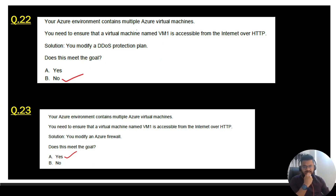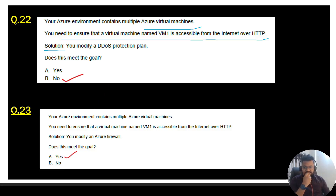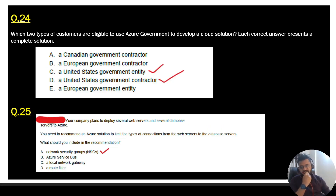Question 22: your Azure environment contains multiple Azure virtual machines. You need to ensure that virtual machine VM1 is accessible from the internet over HTTP. The proposed solution is to modify a DDoS protection plan — that is not correct, so go with No. Question 23: same problem statement, but the solution is to modify an Azure Firewall — that is the correct answer, so go with option A, Yes, this meets the goal.